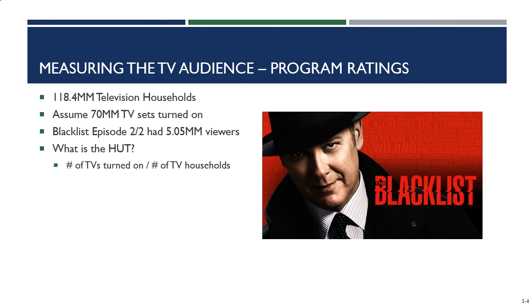Let's calculate the HUT. The number of households using television is our HUT, so we take the number of TVs turned on and divide by the number of TV households: 70 million divided by 118.4 million equals 59.12%. So we know that 59% of TV households were turned on on February 2nd — not necessarily tuned into our program, but turned on at that time.